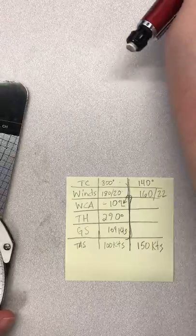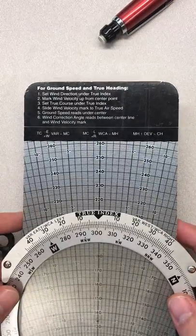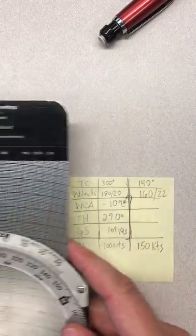So let's find what our correction angle, heading, and ground speed is going to be. We'll just run through those same six steps for this new data set.